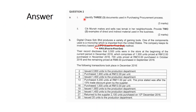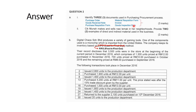The first answer, A: Identify 3 documents used in the purchasing procurement process. Basically, there are 6 documents in the procurement process: purchase order, cohesive note, purchase requisition form, material requisition form, invoice, and goods inspection notes. The answer is any 3 of these, because the question requires only 3 documents.